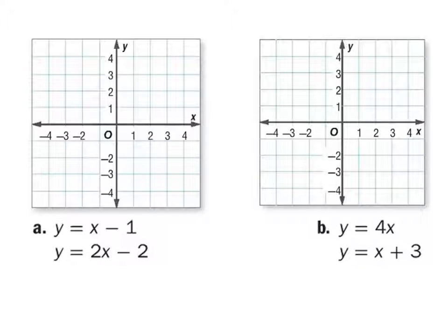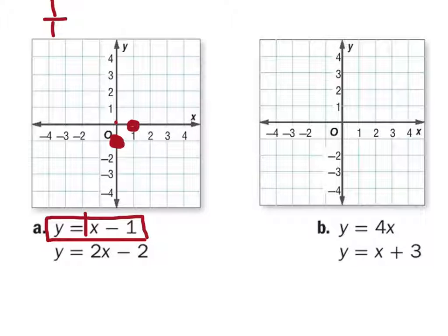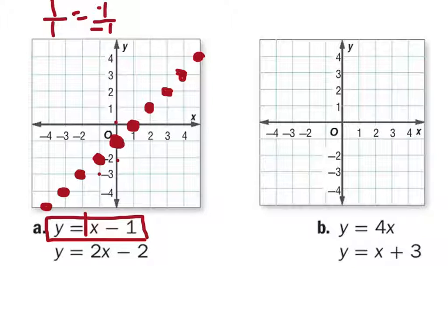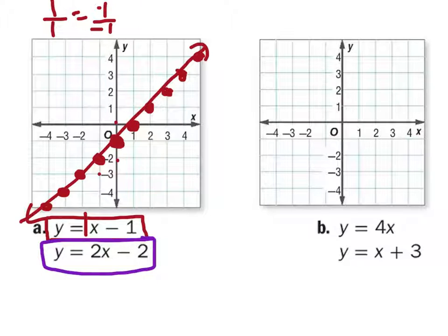Let's look at this first equation. What is the y-intercept? Negative 1. So on the y-axis I go to (0, negative 1) right here. What's the slope? 1. So it's either 1 over 1 or negative 1 over negative 1. Going up 1 and to the right 1, then continuing that pattern. Or down 1 and to the left 1 going the other way. That looks pretty good.